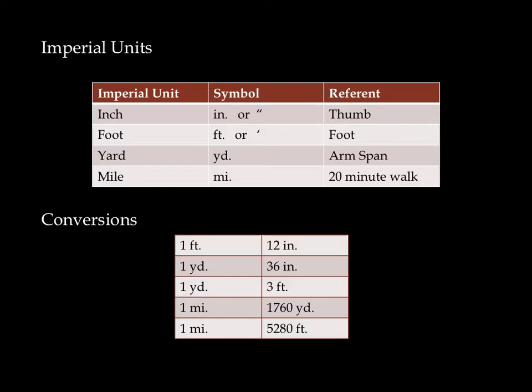So imperial units, you've already seen before, are the old school units that we've created historically, such as the inch, the foot, the yard, and the mile. There are different referents for each of these. The inch, for example, is exactly the same size as a thumb. That's actually the Scottish word - inch is the Scottish word for thumb. A foot is obviously a foot, your arm span is a yard, and a 20-minute walk is a good referent for a mile.